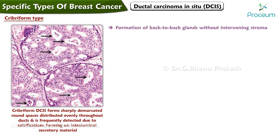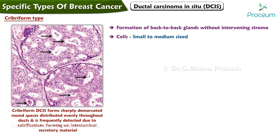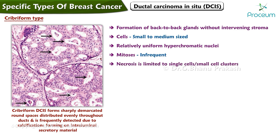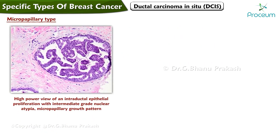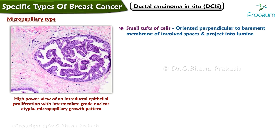The cribriform type is characterized by the formation of back-to-back glands without intervening stroma. The cells comprising this subtype are typically small to medium-sized and have relatively uniform hyperchromatic nuclei. Mitoses are infrequent and necrosis is limited to single cells or small cell clusters.